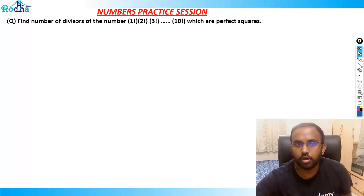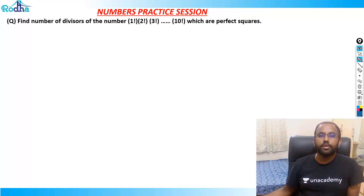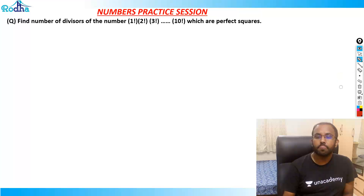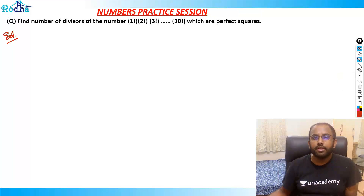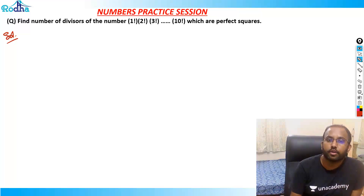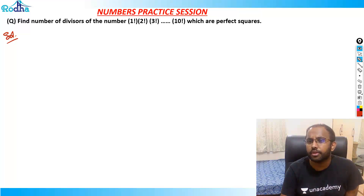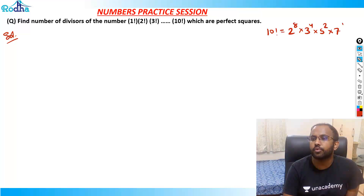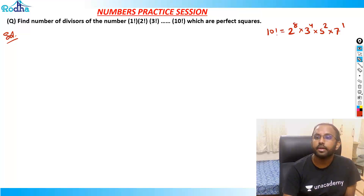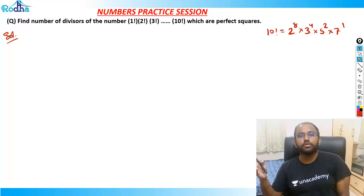Let's continue with our questions. This question says: find the number of divisors of 1! × 2! × 3! × ... × 10! which are perfect squares. We just need to quickly find out the number of prime factors of every factorial. You should remember that 10! = 2^8 × 3^4 × 5^2 × 7^1. That's the prime factorization of 10 factorial.